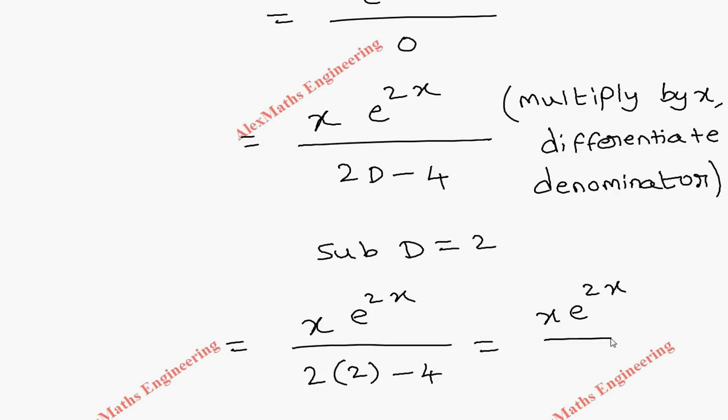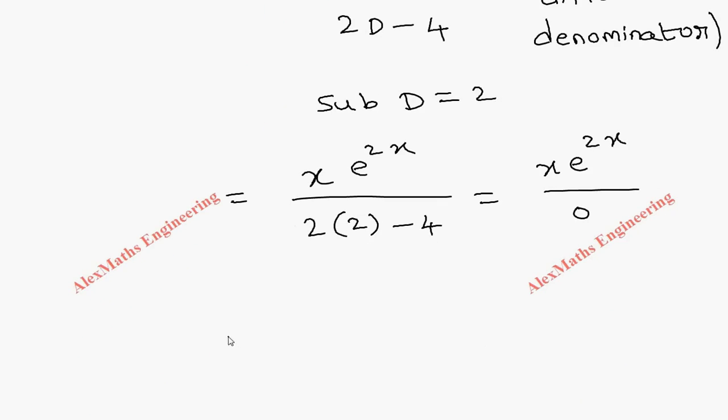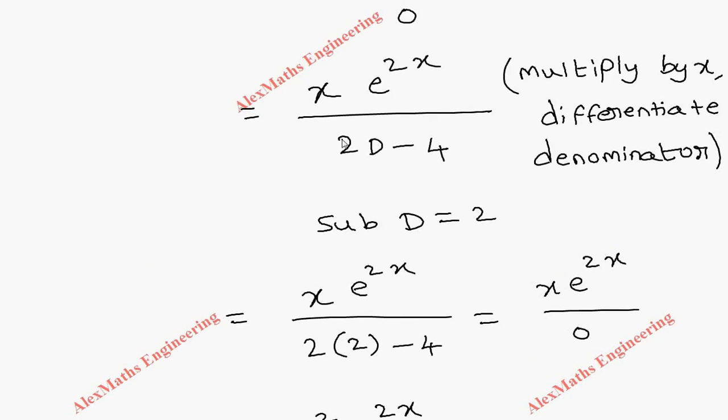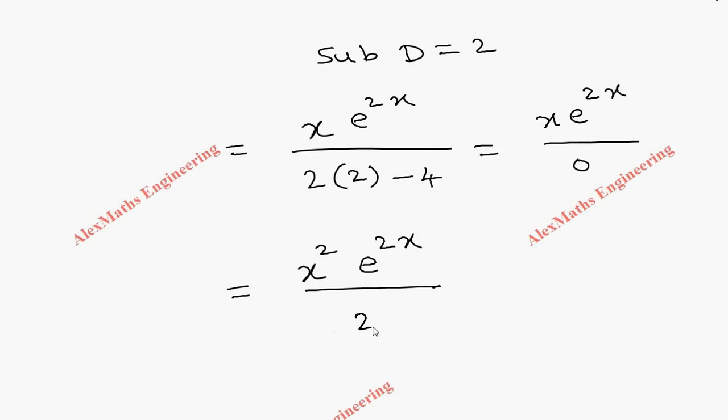So again we have to multiply with one more x. Already there is x, so it will become x². Then e^(2x) divided by differentiation of the denominator, 2D - 4 is only 2. So we got the particular integral.